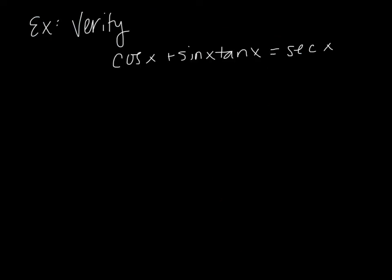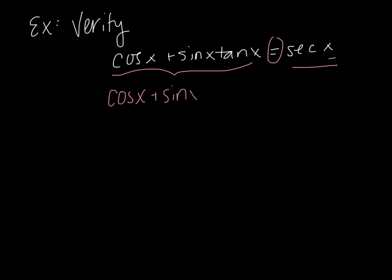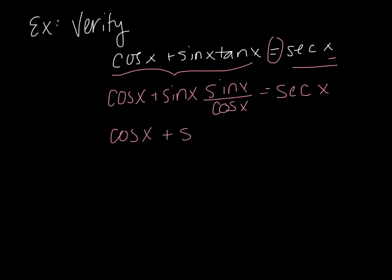Now here's an example of verifying an equation — there's an equal sign, so I need to bring one side to equal the other. The left-hand side is much more complicated and uses addition, so I'm going to work with it and carry secant x on the right as-is. I'll replace tangent with its quotient identity, so I have cosine x plus sine x times (sine x over cosine x), which equals secant x. Multiplying gives cosine x plus sine squared x over cosine x, equals secant x.